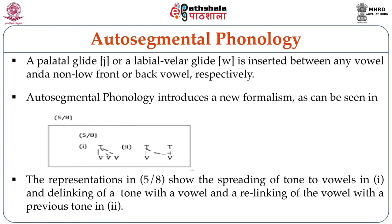In addition to the three parts, there can be a fourth part of a phonological rule: conditions. The conditions can be of this kind — the rule applies only to words of a certain lexical category, such as nouns or verbs, or it can apply only to native vocabulary, not to borrowed vocabulary. In some of the Dravidian languages, such as Malayalam, the phonologies of native Dravidian vocabulary and of borrowed vocabulary from Sanskrit may be different. So we can have a condition saying the rule applies only to words of a certain origin.